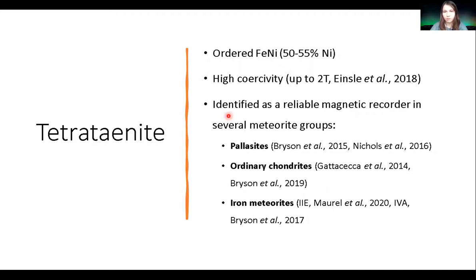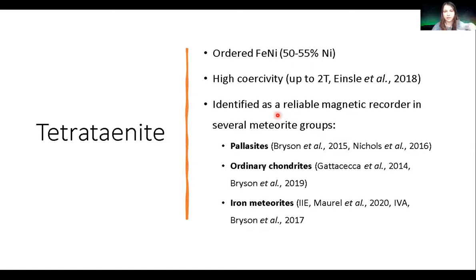Tetrataenite is the ordered form of taenite, which is iron-nickel with high nickel content. Tetrataenite is generally between 50 and 55 percent nickel, and it forms through very slow cooling through the ordering temperature of 310 degrees Celsius. Importantly, it's been identified to have incredibly high coercivity — up to 2 Tesla — and all of these meteorites listed are ones where tetrataenite has been identified as a reliable magnetic carrier.